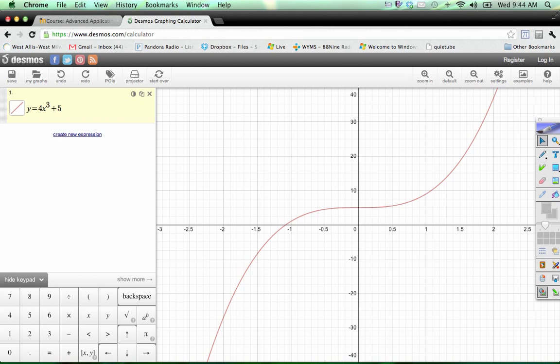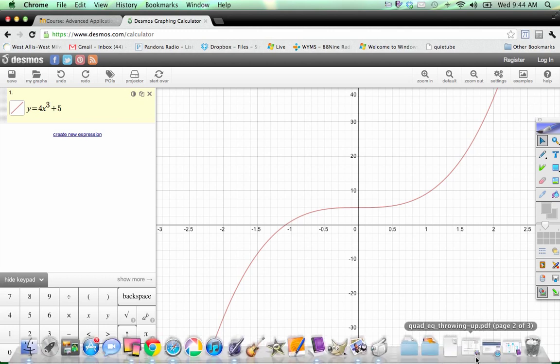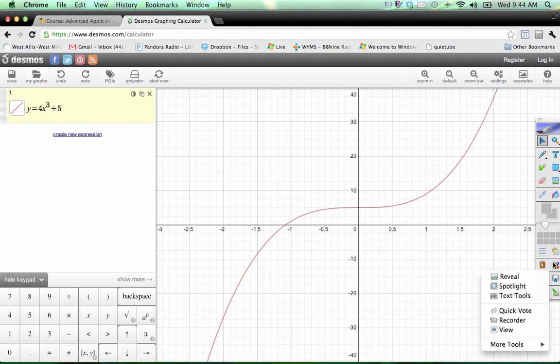We can use those input-output tables to create graphs. We could talk about x and y-intercepts. All those normal things we do with equations, and specifically polynomials, we can do with quadratics. The differences are as I outlined here for you in this video. Thank you very much. Enjoy.